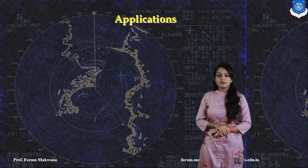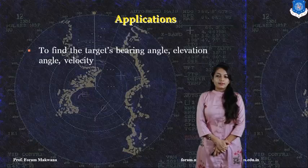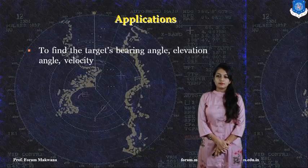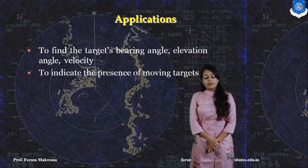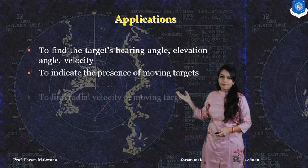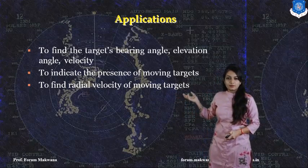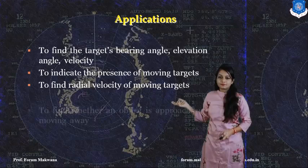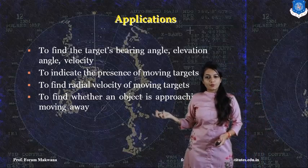What are the applications of continuous wave RADAR? We are able to find the velocity of the target, the elevation angle, and visibility. Second, we are able to find the angular velocity of the target — once we have the velocity of the target, we are able to determine that.